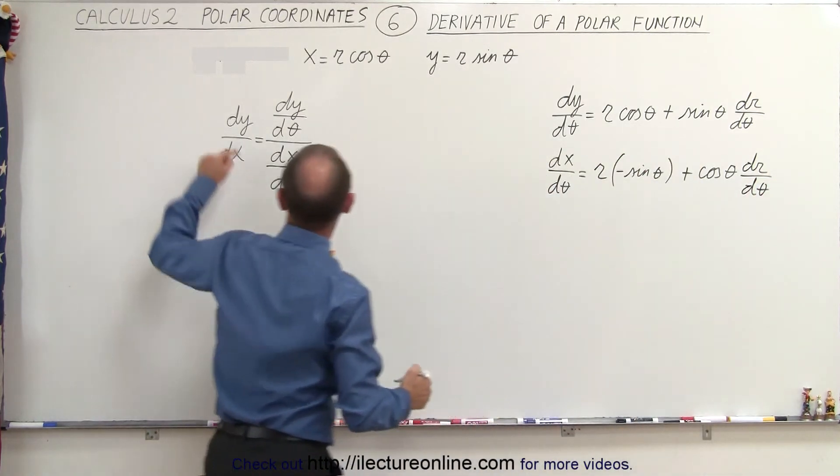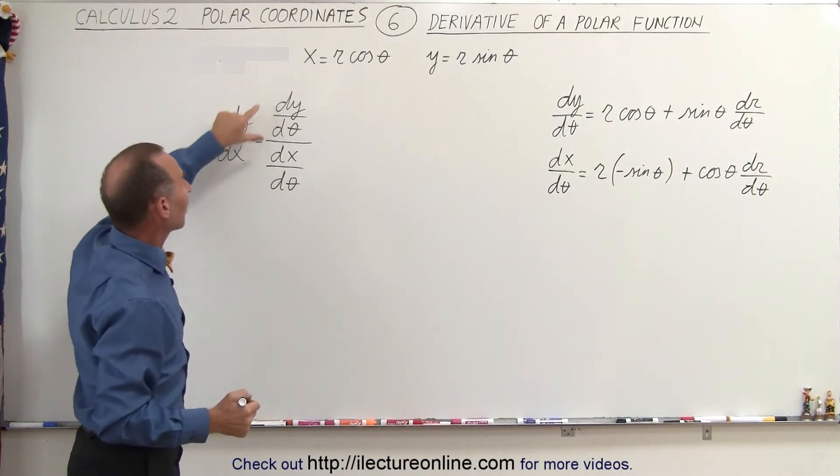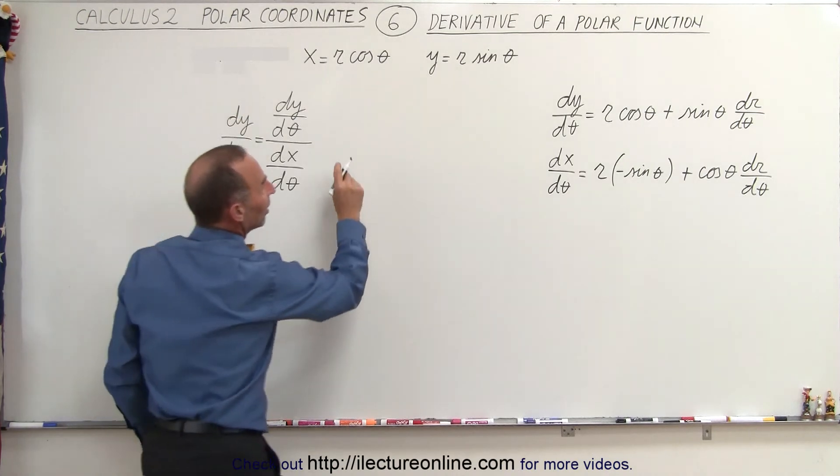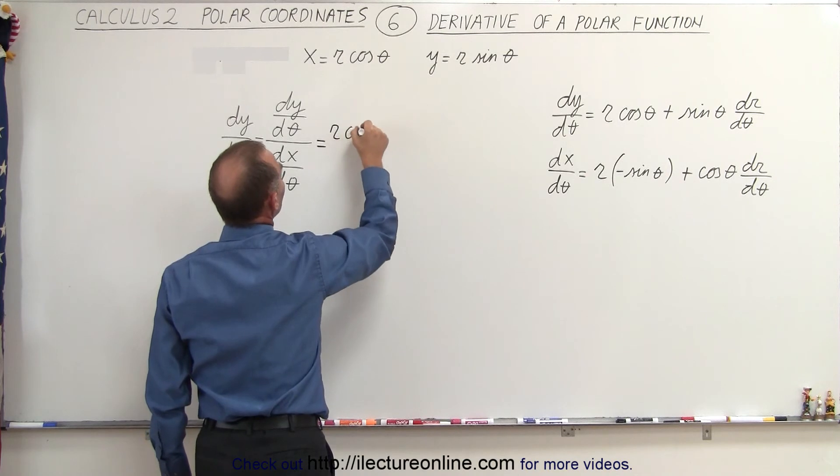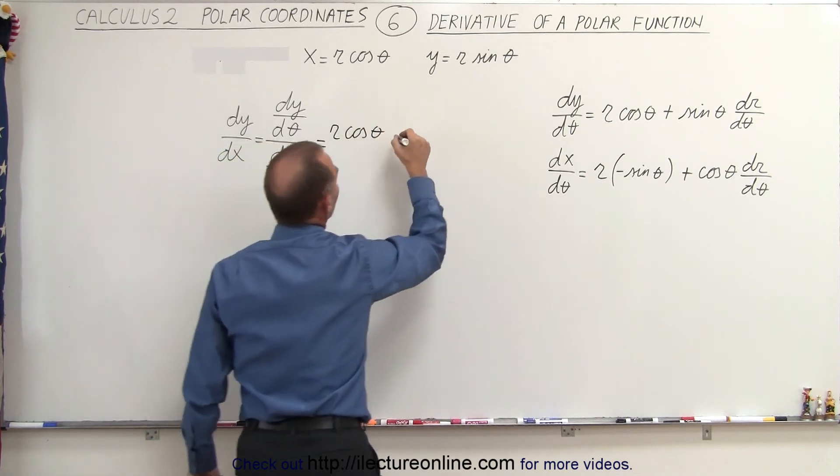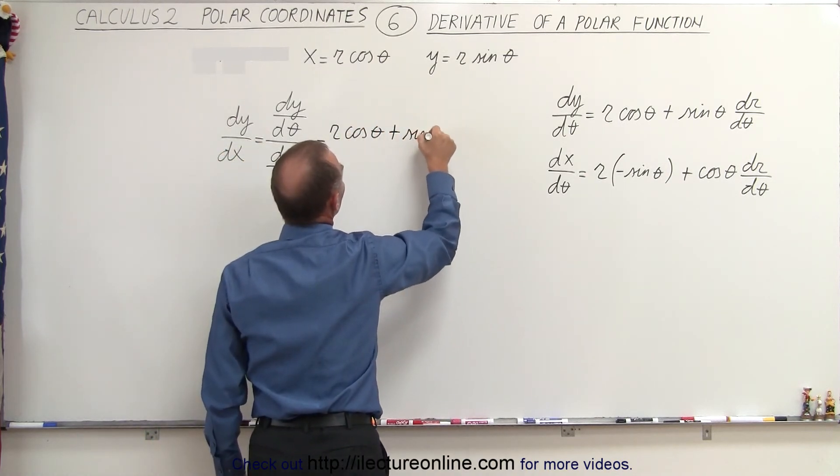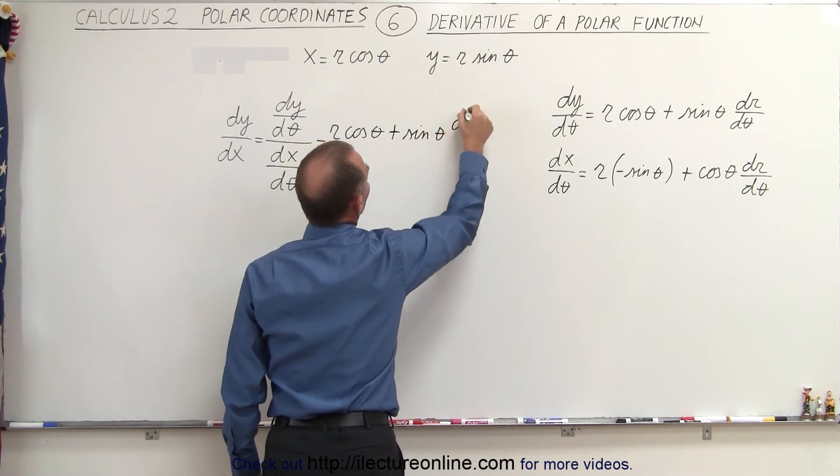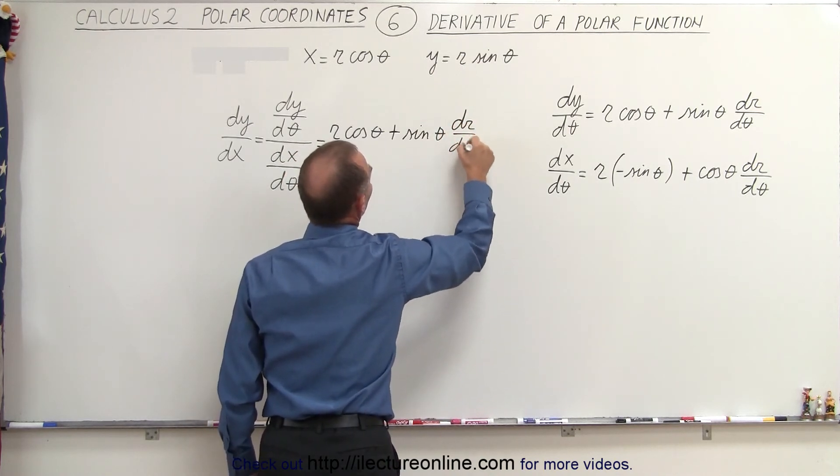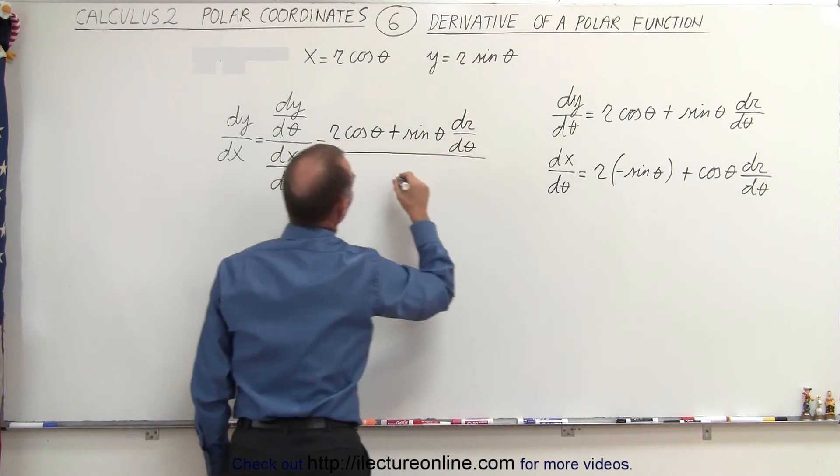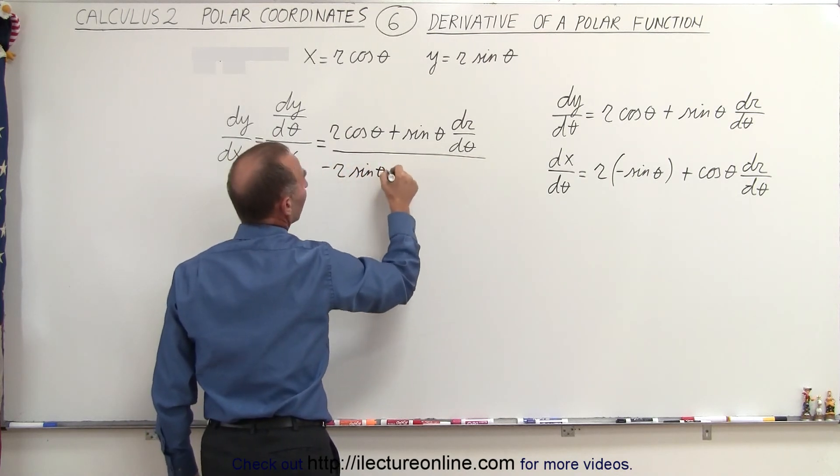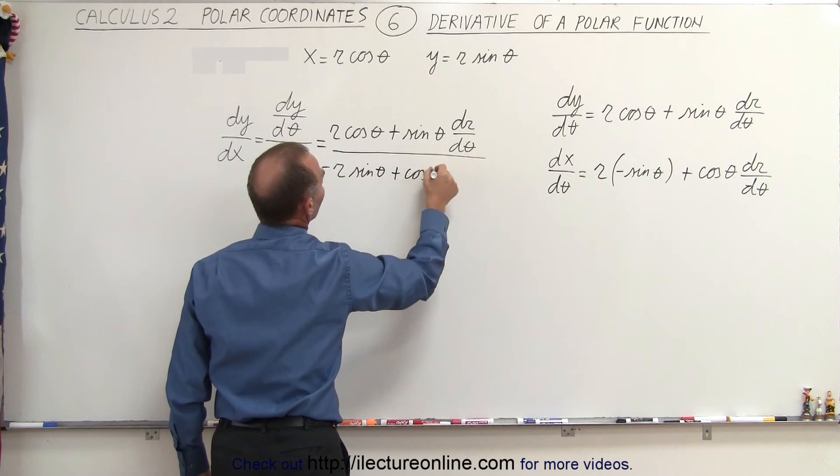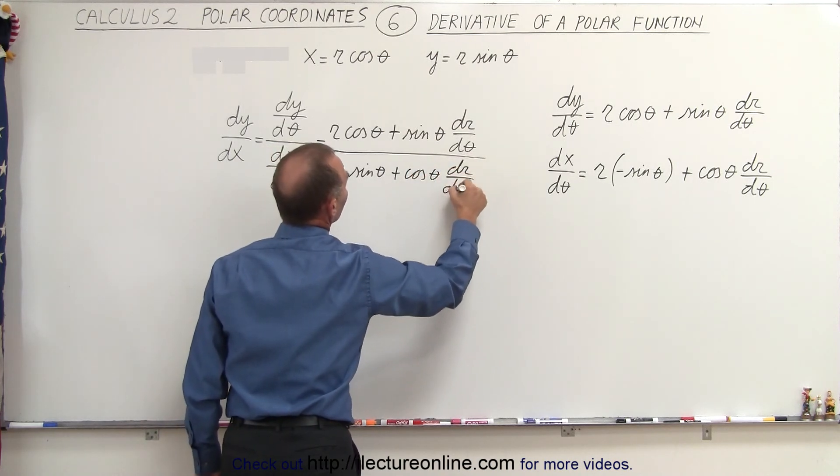And then, if we want to find dy/dx, we take the numerator divided by the denominator. So in this case, we take r times the cosine of theta, plus the sine of theta times dr/dθ, and we divide the whole thing by minus r times the sine of theta, plus the cosine of theta times dr/dθ.